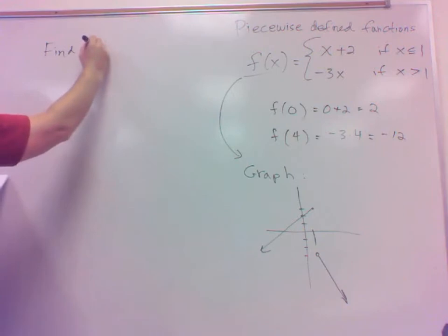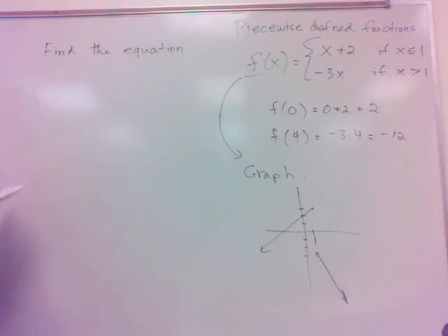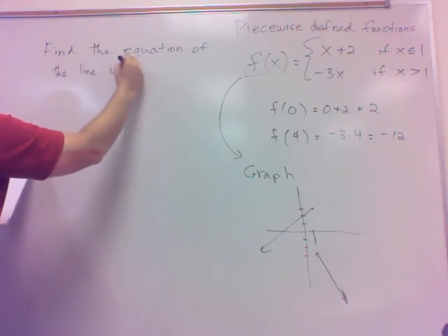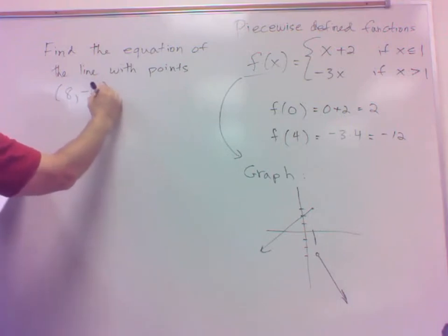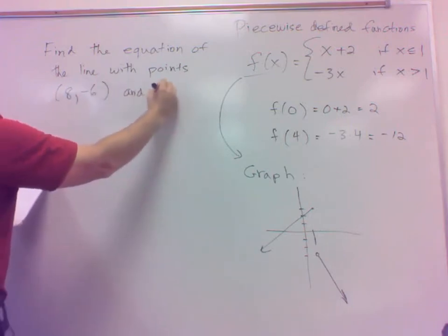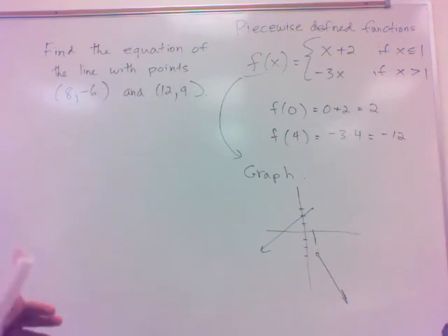That is, find the equation of a line. We have to do that several times throughout the semester, so be sure we know how to do this. Find the equation of the line with points, two points, 8, negative 6, and 12, 9. Would you do that for me? Find the equation of a line with those points. A couple of ways we could go. Well, one thing we would have to start off either way we go with is I'd have to start off with a formula, and that would be what? Slope formula, right?